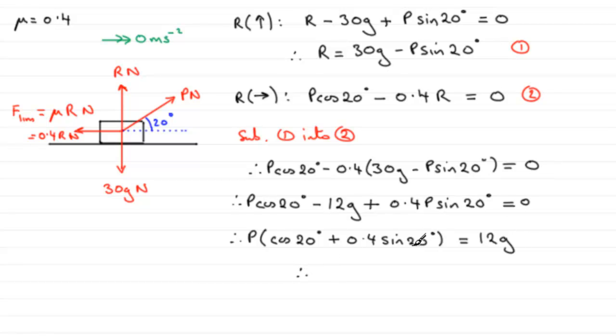So to get P, obviously I just need to divide both sides by this bracket here. So taking g to be 9.8 as well, we've got 12 multiplied by 9.8 all divided by cosine of 20 degrees plus 0.4 sine of 20 degrees. And if you work this out on your calculator, what you should find you get is 109.242 and so on. And we need to round this up to some degree of accuracy. So let's suppose we round it to say three significant figures. It would be 109 newtons then to three significant figures for the value of P.